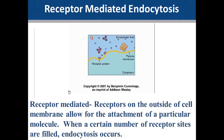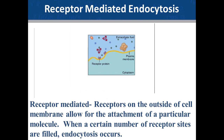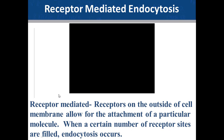Last but not least, receptor-mediated endocytosis. Unlike phagocytosis and pinocytosis, receptor-mediated endocytosis is very specific. It is triggered when membrane receptors bind to specific external molecules, such as protein-cholesterol complexes or proteins bound to iron. Membrane vesicles pinch off and the external protein and its cargo are brought into the cell. This is how your body regulates cholesterol. If you are missing some of those receptor sites, you are susceptible to high cholesterol levels, and people with such a defect may have a heart attack at age 40 or younger.